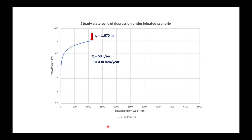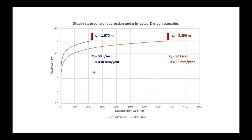Under the irrigated scenario our steady state cone of depression has a radius of influence of just over a kilometer, discharge of 50 liters per second, and recharge of 438 millimeters per year from the USGS estimates. If we urbanize and irrigation ceases, the radius of influence increases dramatically from about one kilometer to almost four kilometers. The drawdown doesn't increase too much because the aquifer has quite high transmissivity.